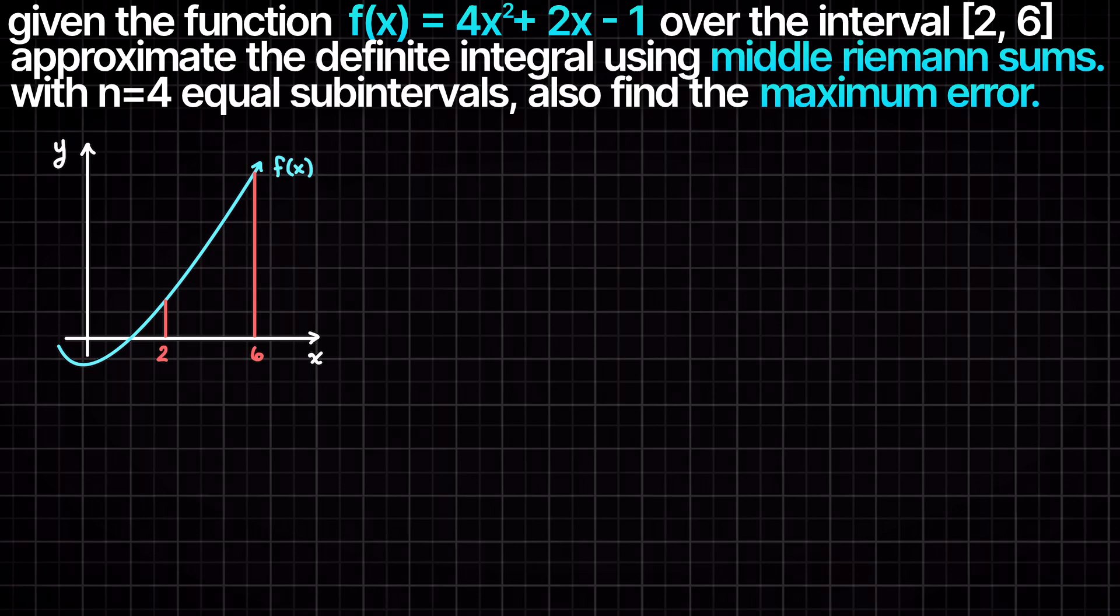The first step we need to do is find our delta x, that being the spacing of our evaluation inputs. Since we want equal spacing of 4 subintervals, we are going to use the following equation.